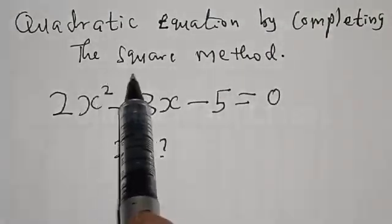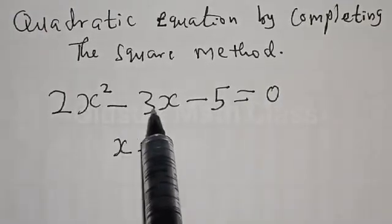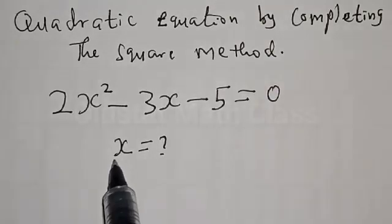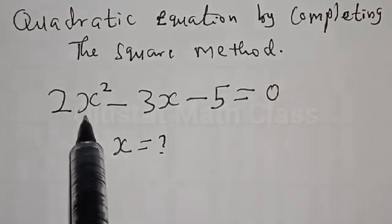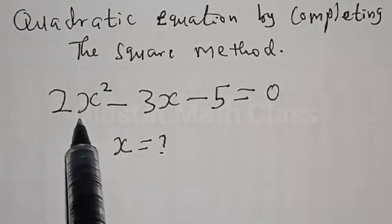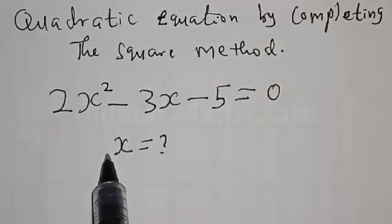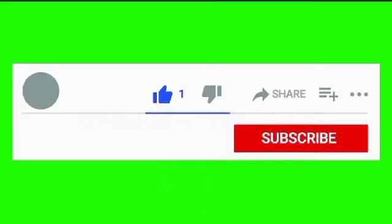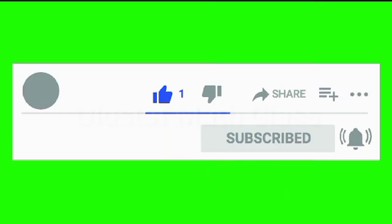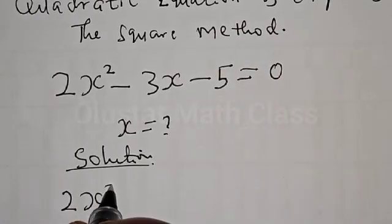We are solving the quadratic equation 2s² - 3s - 5 = 0 to find the value of s using the completing the square method. Hi everyone, welcome to this class. Today we want to look at how to find the value of s from this given quadratic equation 2s² - 3s - 5 = 0. Before we proceed, please don't forget to like, share, comment and subscribe.